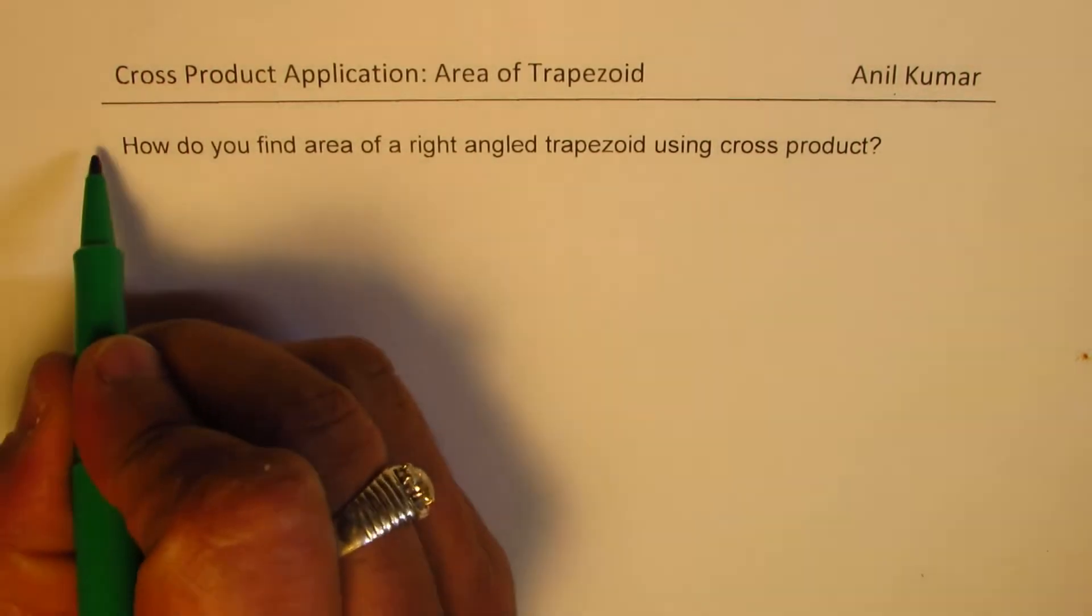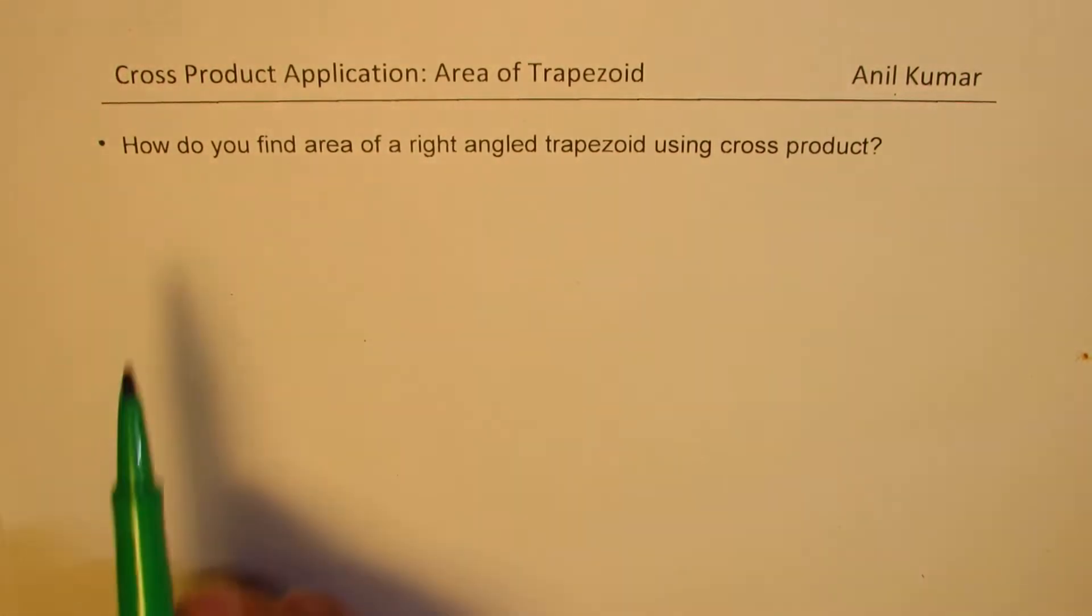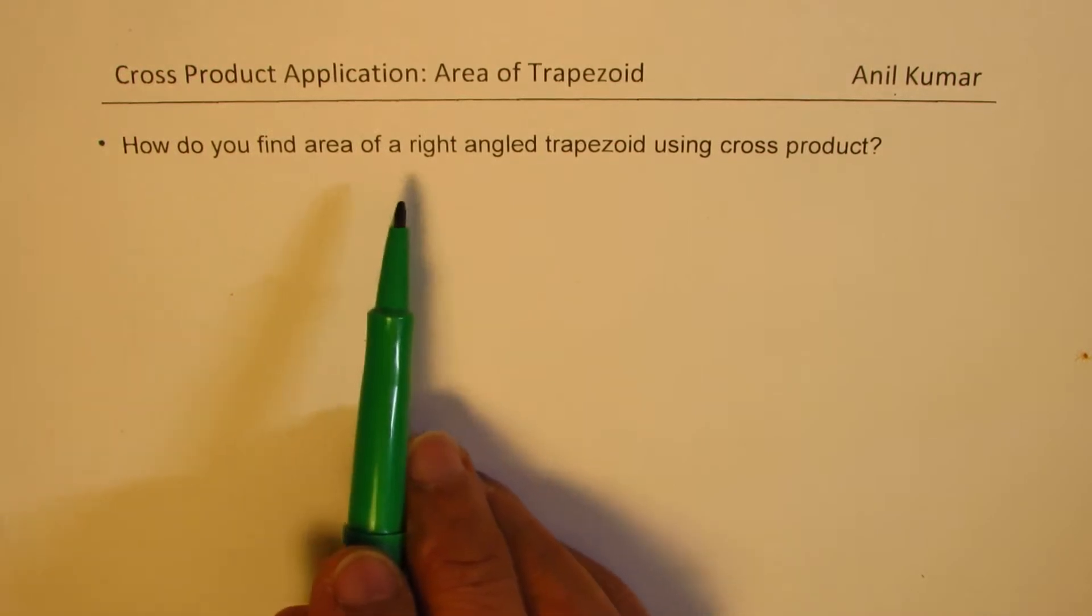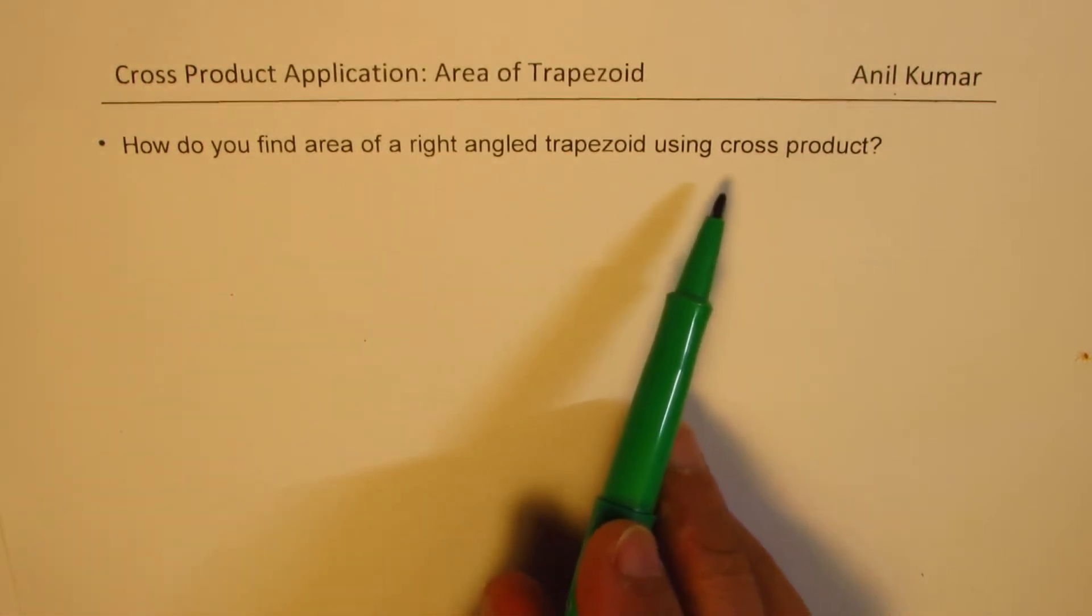We have a very special case here and the question is, how do you find area of a right angle trapezoid using cross product?